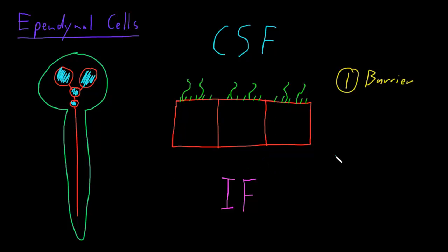The second major function of ependymal cells is to participate in secretion of the cerebrospinal fluid. And specialized ependymal cells and capillaries form little tufts in some of these spaces in the brain.